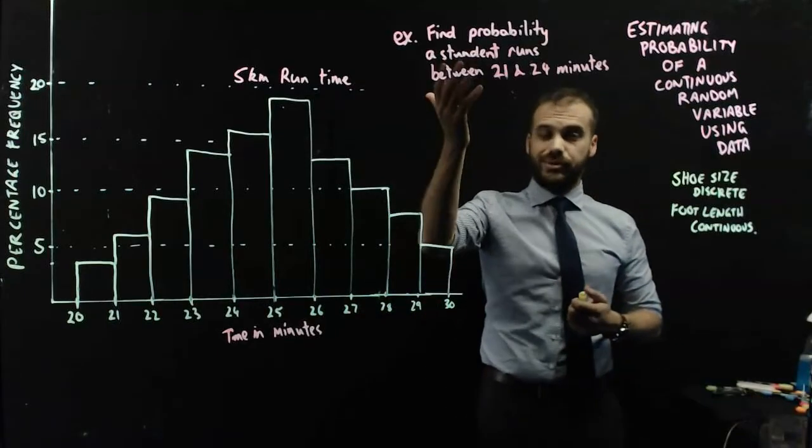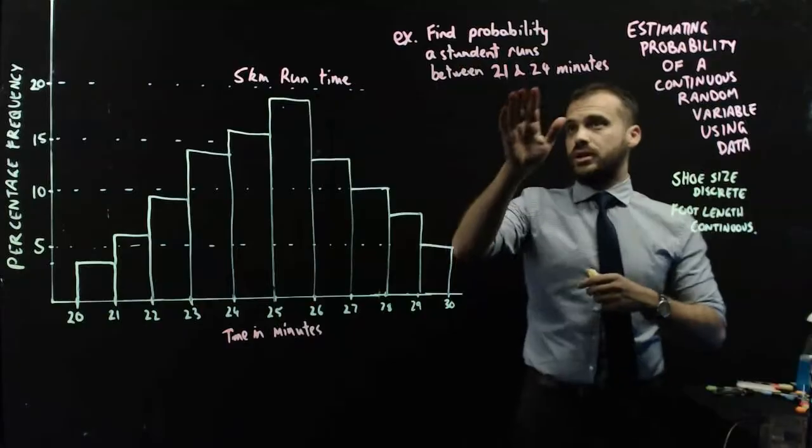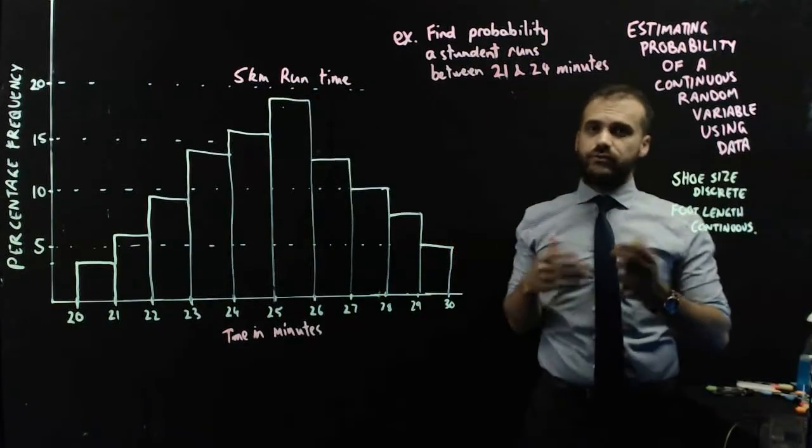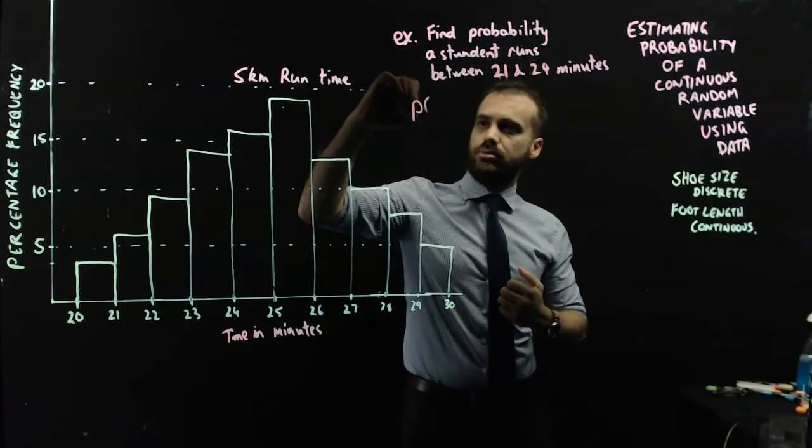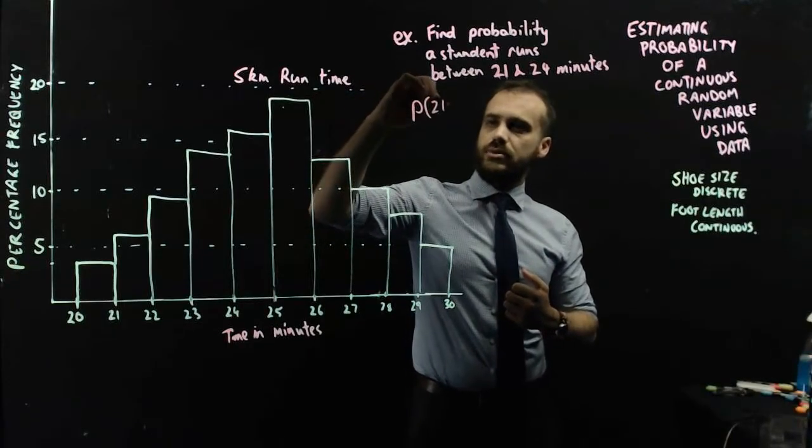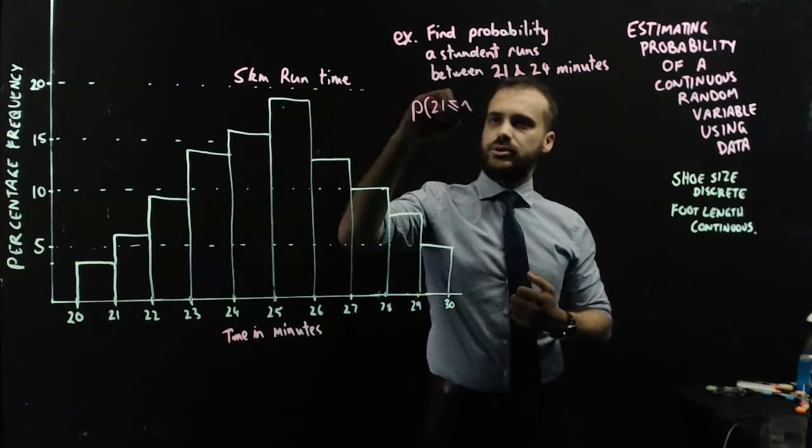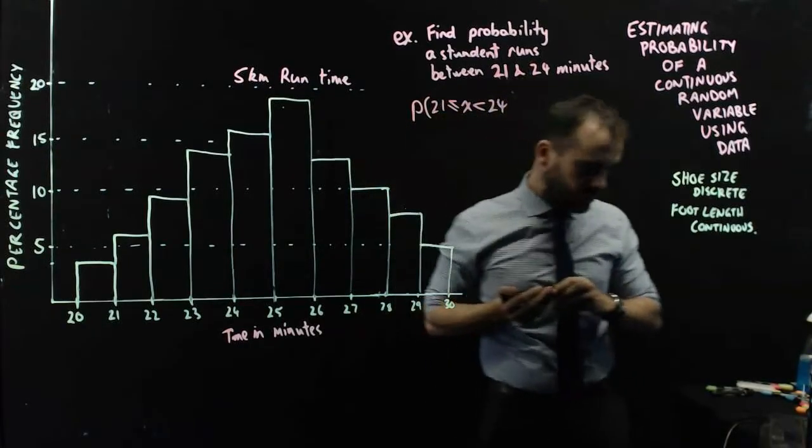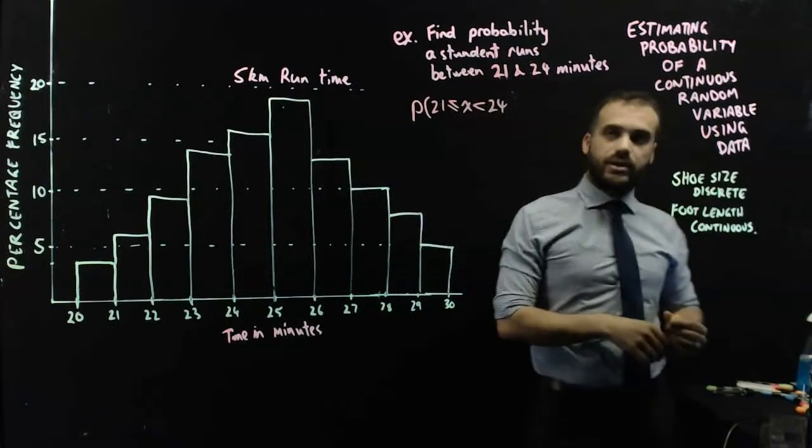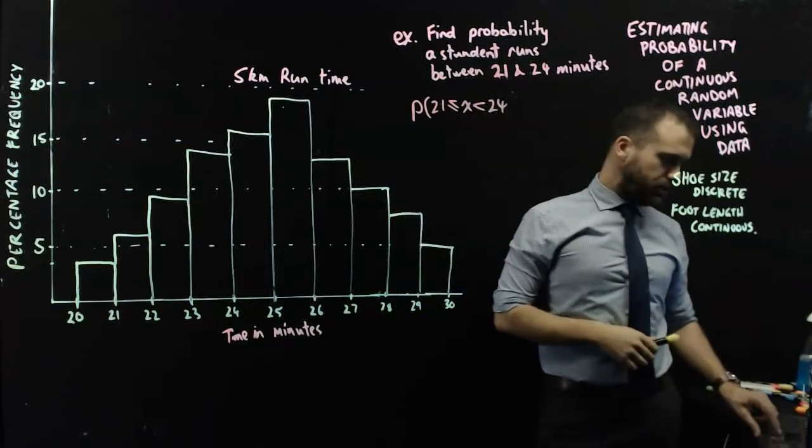So our first question is here. Find the probability a student, a random student, runs between 21 and 24 minutes. So writing that a little more algebraically, we say the probability that 21 is less than or equal to x, which is less than 24. Actually, I shouldn't use the equal to, because I said between 21 and 24. That doesn't include 21 and 24.